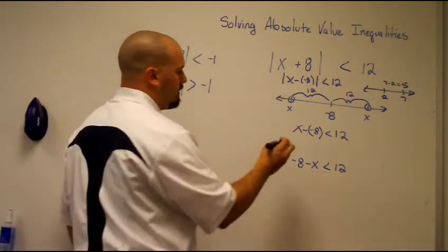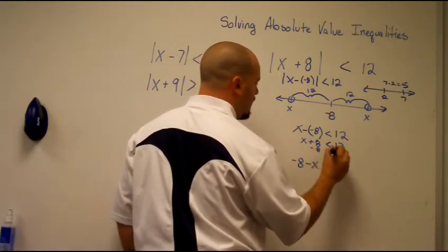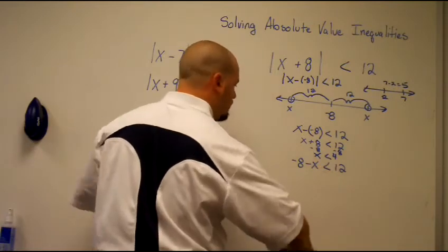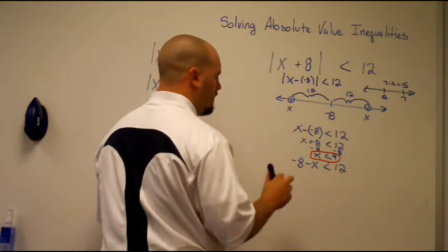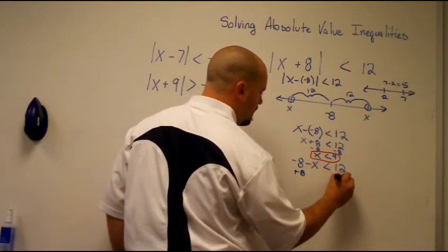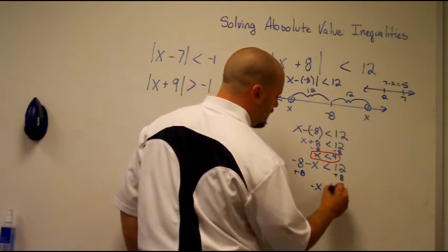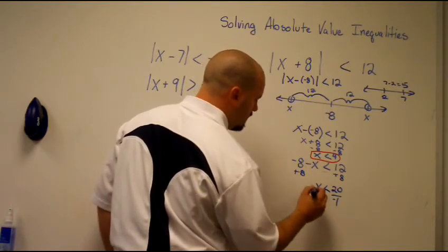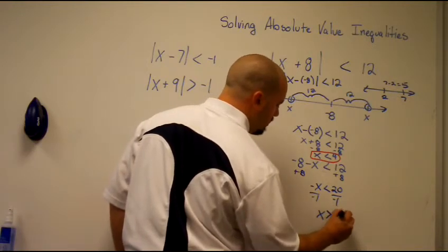So x minus negative 8 is really x plus 8 is less than 12. Subtract 8 from both sides to get x is less than 4. For the other inequality, negative 8 minus x is less than 12 — add 8 to both sides to get the opposite of x is less than 20, then divide by negative 1. When we divide by a negative we reverse the sign, giving x is greater than negative 20.